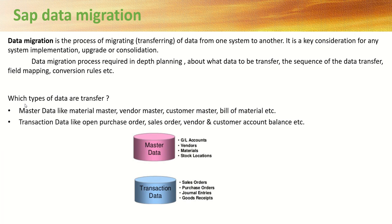What are the different types of data which we need to transfer? In any system, we can generally categorize data into two major parts: master data and transaction data. Master data includes material master, vendor master, customer master, bill of material, etc. — data that once created, we rarely change. Transaction data includes open purchase orders, sales orders, vendor and customer ledger, etc. — data that we frequently generate on a day-to-day basis.